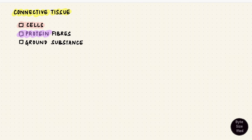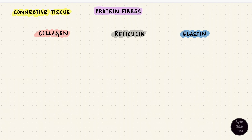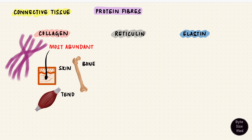Next up are the protein fibers, which include collagen, reticulin, and elastin. These three are distributed in different proportions depending on what part of the body they're in. Collagen is the most abundant of the three and is almost everywhere — in skin, bone, tendon, and cartilage — making it the most abundant protein in the body. It's important for tensile strength and support.